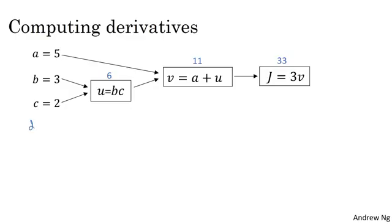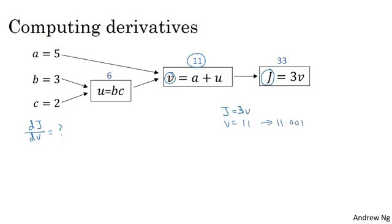Let's say you want to compute the derivative of j with respect to v. So what is that? Well, this says if we were to take this value of v and change it a little bit, how would the value of j change? j is defined as 3 times v, and right now v is equal to 11. So if we were to bump up v by a little bit to 11.001, then j, which is 3v, so currently 33, will get bumped up to 33.003.